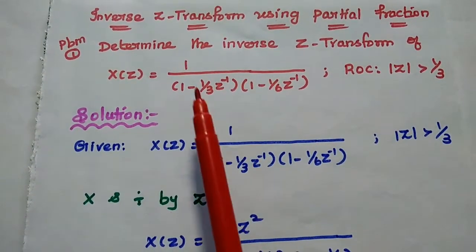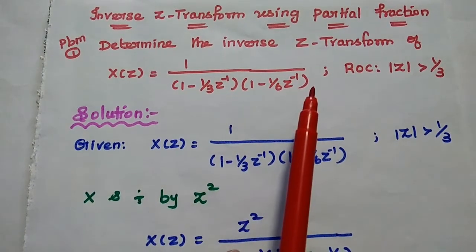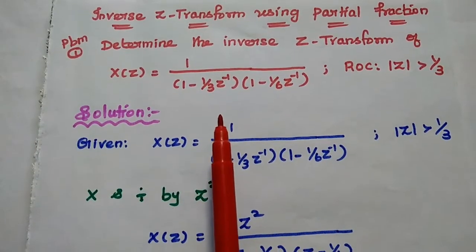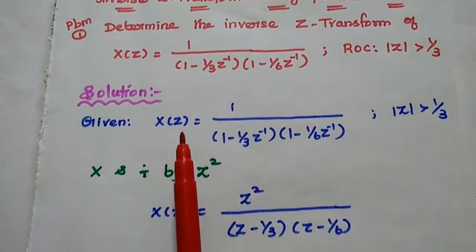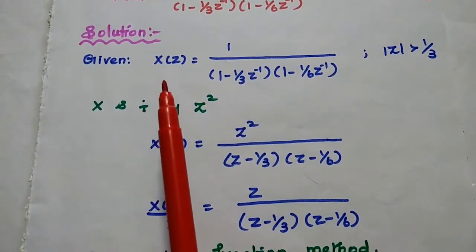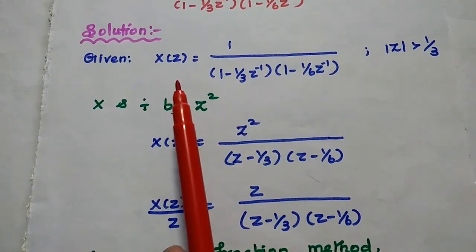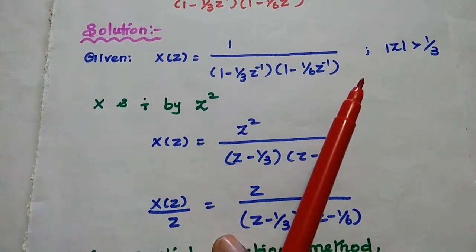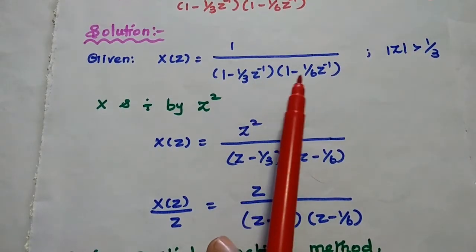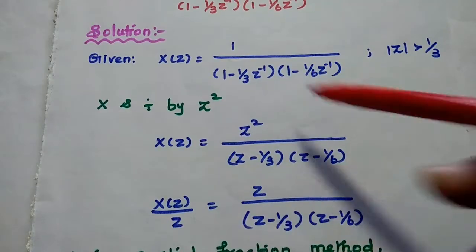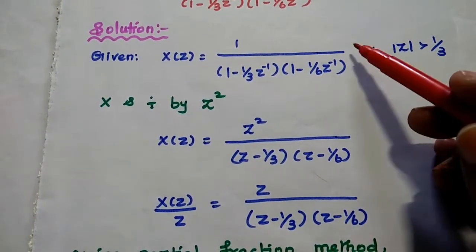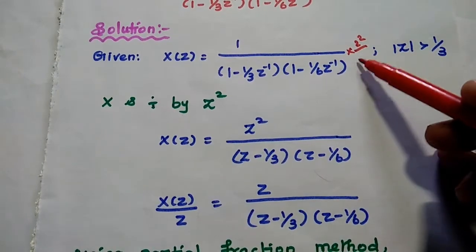So here we will find the inverse Z-transform using the partial fraction method. The given data is X(Z) = 1 / [(1 - (1/3)Z⁻¹)(1 - (1/6)Z⁻¹)]. To simplify, we multiply the numerator and denominator by Z².